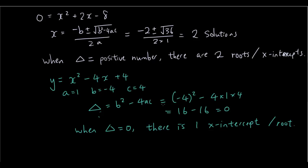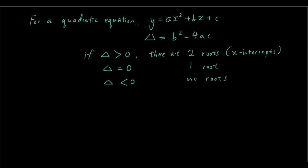So the summary from today: for a quadratic equation y equals ax squared plus bx plus c, the discriminant (symbolized by a triangle) equals b squared minus 4ac. If the discriminant is greater than 0 — a positive number — there will be two roots, or two x-intercepts. If the discriminant equals 0, there will be one root, or one x-intercept. And if the discriminant is negative — smaller than 0 — then there will be no roots, or no x-intercepts. Thanks for watching guys, see you next time.